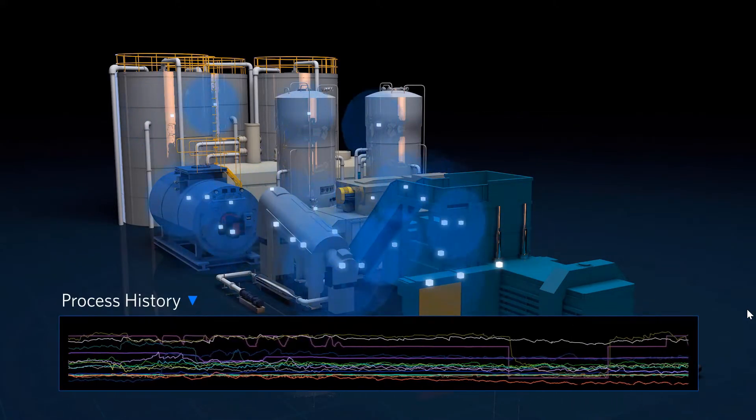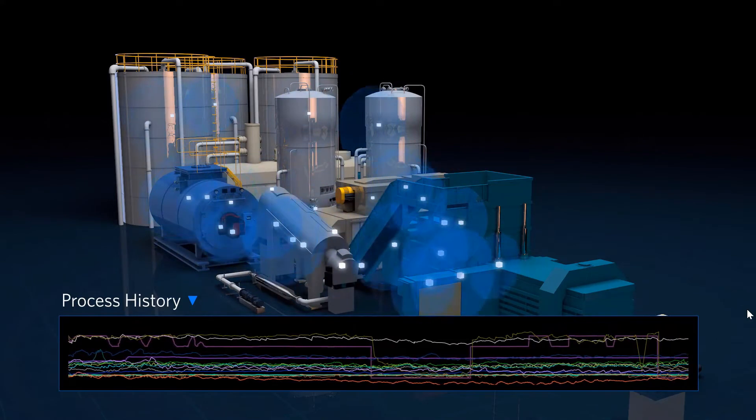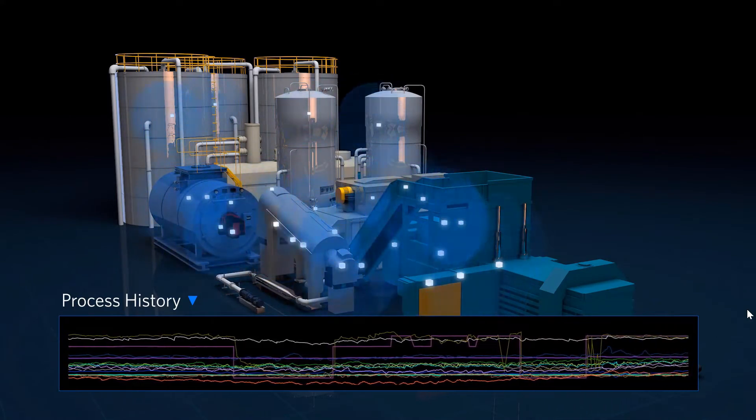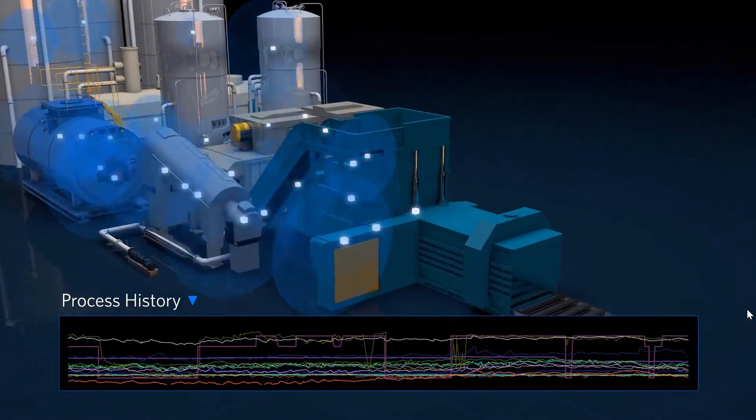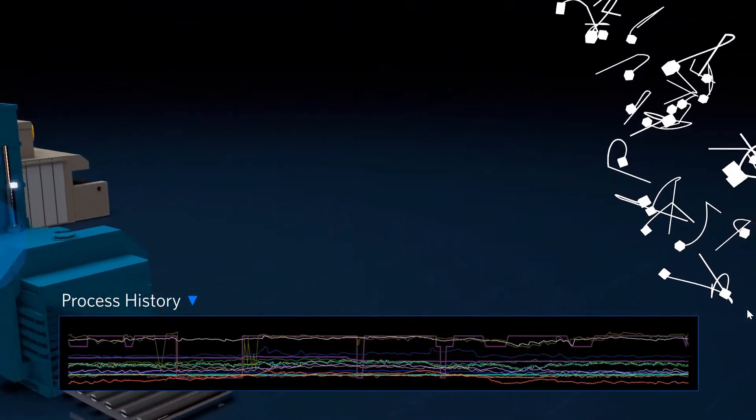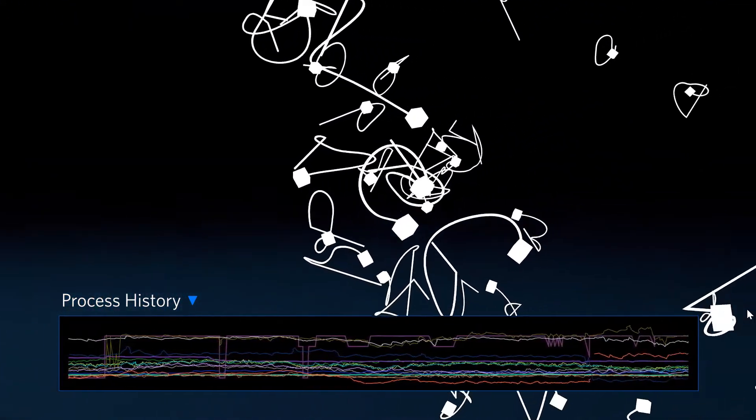By examining the archived history of a particular manufacturing process, Aspen ProMV connects a multitude of different conditions, relationships, and variability over time that lead to different product outcomes.